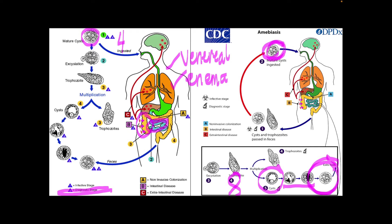The quadrinucleated cyst is resistant to gastric acidity and desiccation and can survive in a moist environment for several weeks. Because of colonic invasion, E. histolytica can remain dormant in the intestine and cause reinfection when triggered. Aside from intestinal invasion, E. histolytica can also invade other organs such as the brain, lungs, and most commonly the liver — this is called extra-intestinal amoebiasis.